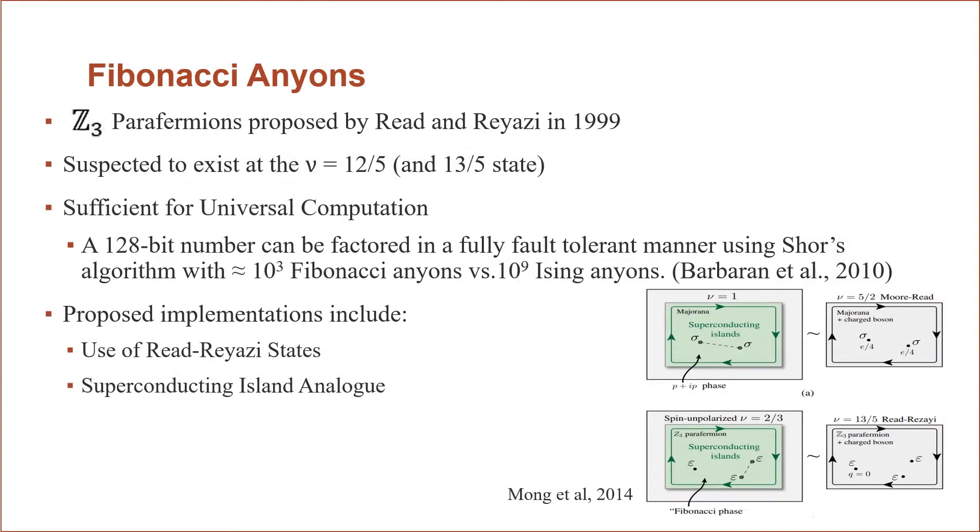So instead of those Majorana and Ising anyons, instead we will focus on the golden standard of non-abelian anyons, which are called Fibonacci anyons. And so these were first proposed by Read and Rezayi in 1999. And they are expected to exist at the nu equals 12 fifths and possibly 13 fifths state. The distinction they have is they actually do have the ability to perform universal computation and braid to form a universal gate set, contrasted with the Ising model, which is actually closed. And they also have an advantage in terms of the number that's needed, which can be seen in this little statement that a 128-bit number can be factored using Shor's algorithm with 10 to the 3rd Fibonacci anyons versus 10 to the 9th Ising anyons by Barbaran in 2010.